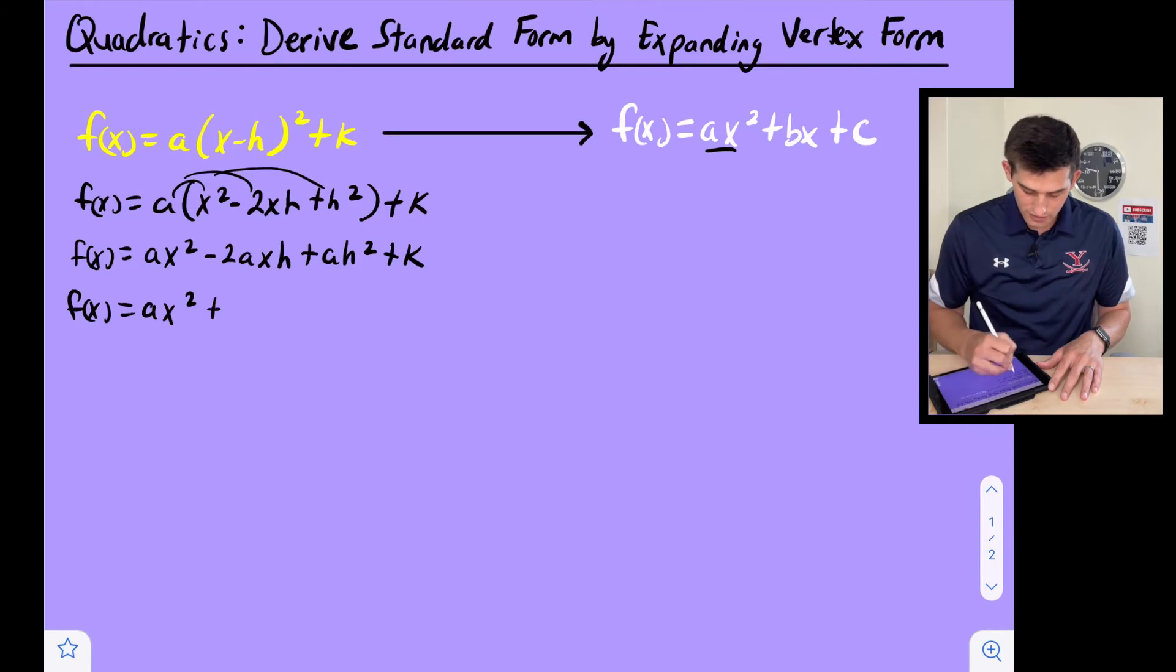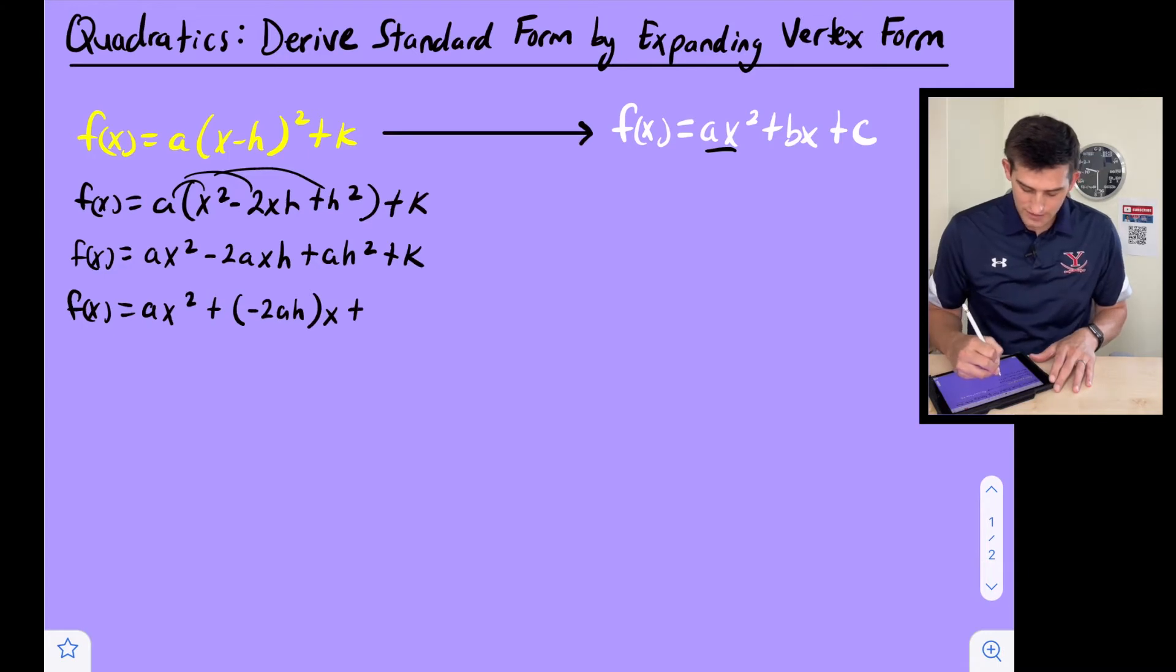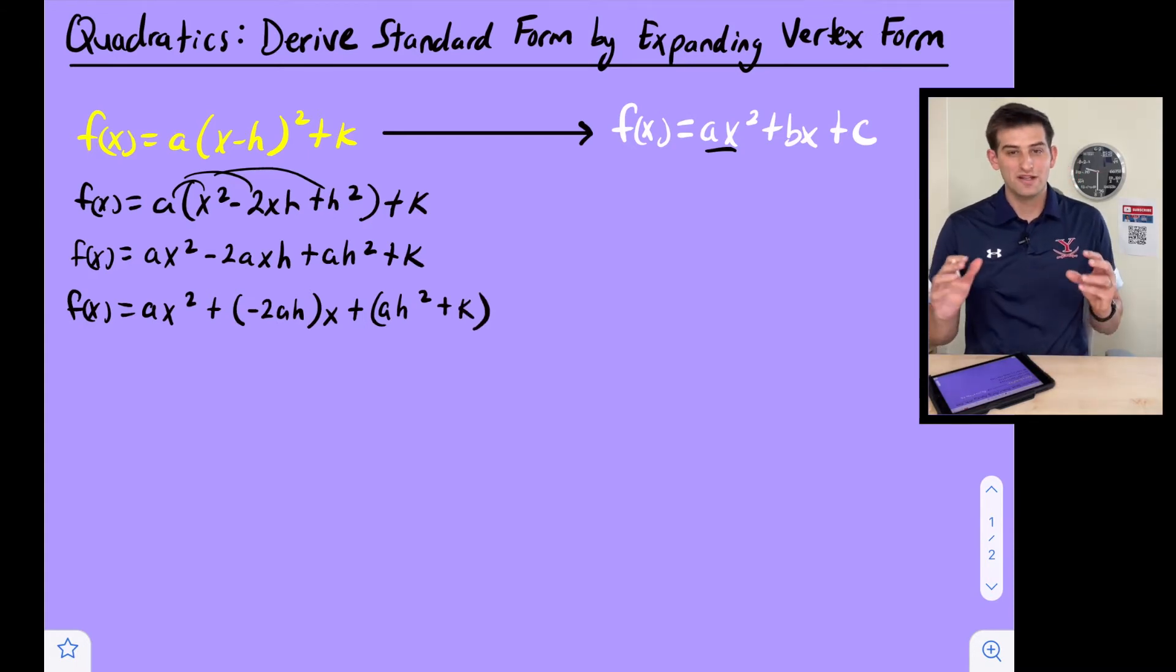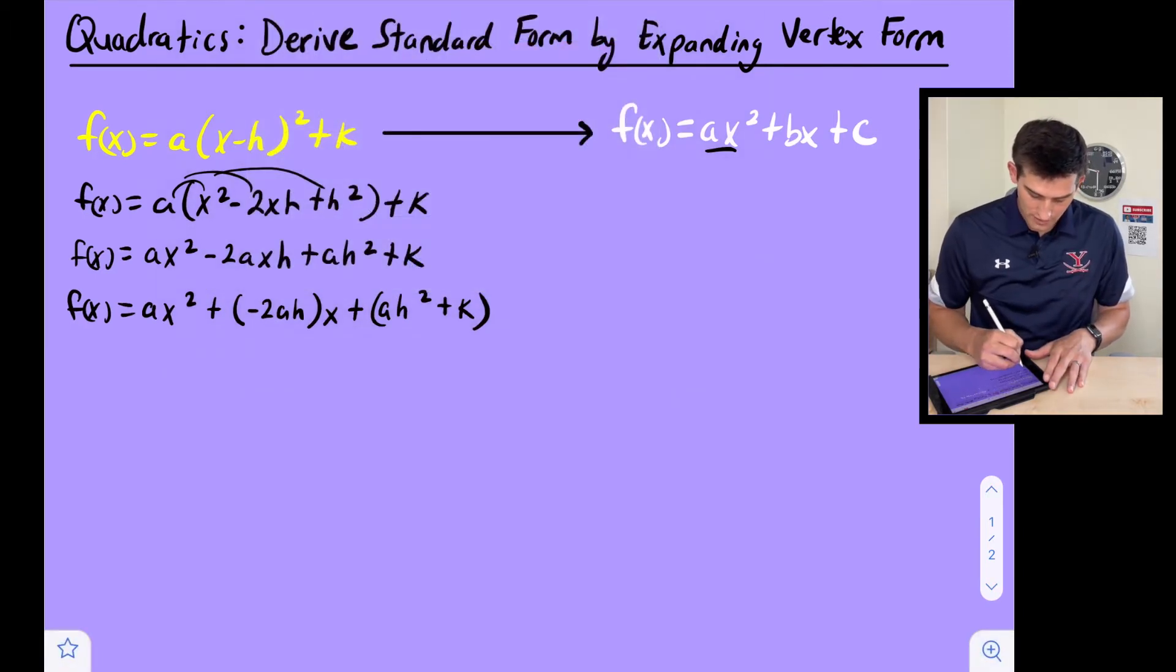So we have f(x) equals, and we're going to leave ax², but now we need plus in our equation. So I'm going to write plus and I'm going to factor out -2ah and write it like this: -2ah times x. And then we're going to factor together now +, in parentheses, ah² + k. And so now we are in standard form.